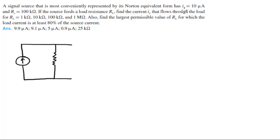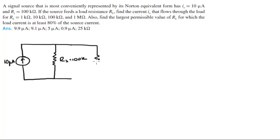The source has a current of 10 picoamps — so IS is 10 pA — and a source resistance RS of 100 kilohms. If the source feeds a load RL, this is RL, find the current IO that flows through the load.